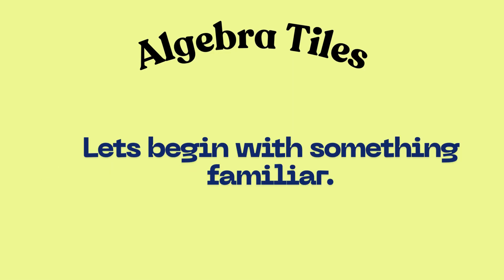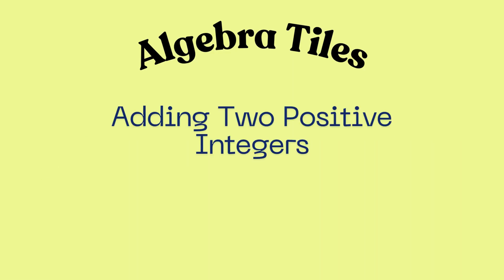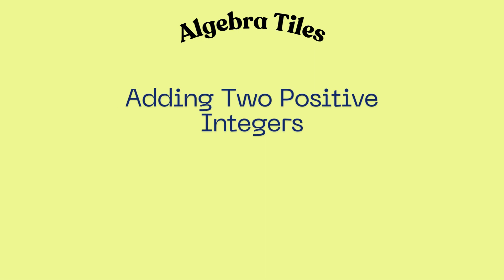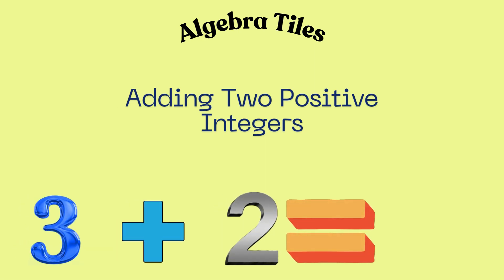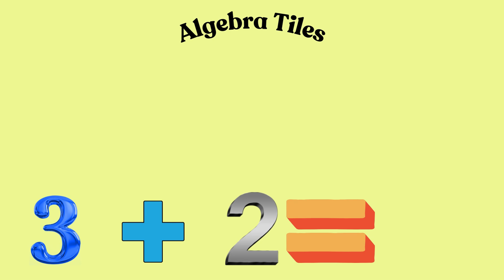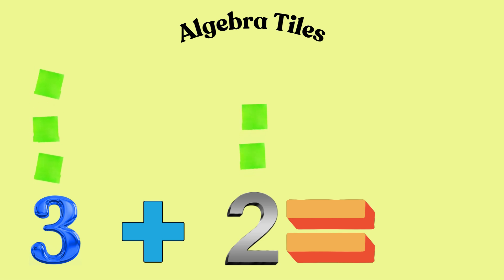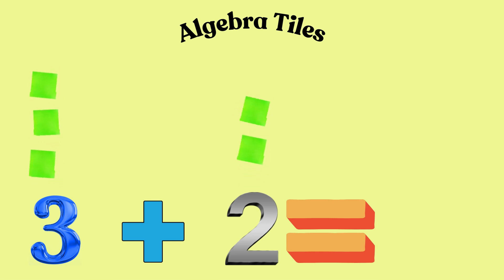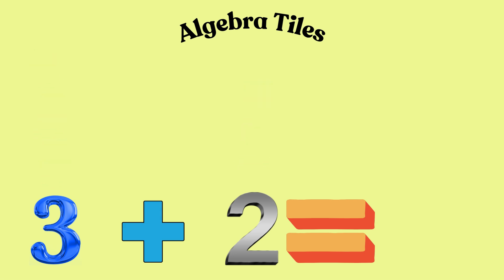Let's begin with something familiar: adding two positive integers. We will use the tiles to calculate 3 plus 2. The 3 is positive, so we will use three green tiles. The 2 is also positive and will be represented by two green tiles. All together, we have five green tiles. This means that 3 plus 2 equals 5.